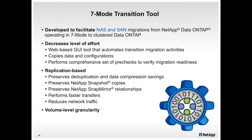The Seven Mode Transition Tool is by far the premier product we work with. It will take any source seven mode system and do cutovers and configurations on the CDOT cluster. We don't have to recreate a lot — we do our planning and make sure we meet all the criteria.